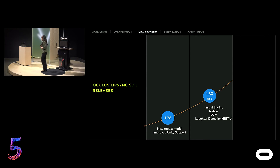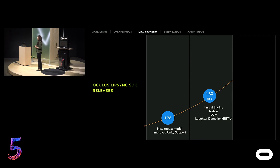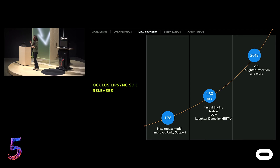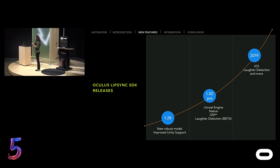In version 1.30, we are offering Unreal Engine support and native C/C++ support. It also comes with DSP acceleration on Hexagon DSP where available. And we are giving you a beta feature: laughter detection. Our avatars are becoming more and more expressive. In 2019, we are going to offer iOS support, laughter detection becomes a full feature, and more.